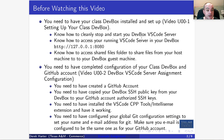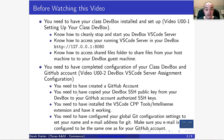You should already know how to cleanly stop and start your DevBox VS Code server, how to access your VS Code server via its URL, and how to access shared files. You also need to have completed the configuration of your class DevBox and your GitHub account, copied your DevBox SSH public key to GitHub, installed the C++ tools extension, and configured your global Git username and email address.